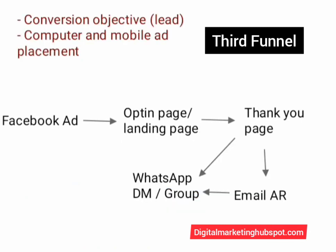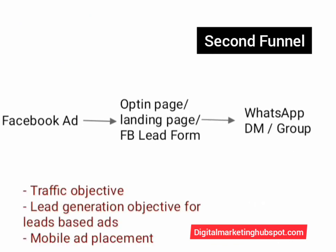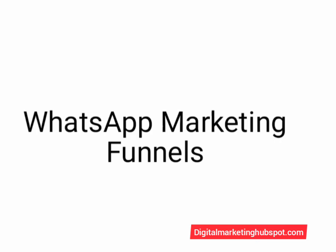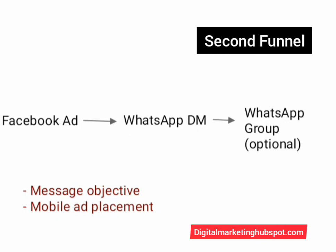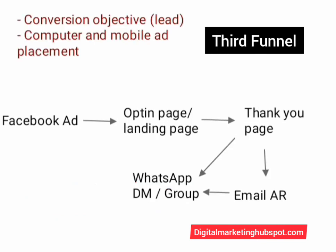For Funnel 1 using Traffic objective, you may not need the pixel, but for the Conversion objective in Funnel 3, you do need it. Placement for Funnel 3 can be both mobile and computer, or mobile only. These are the three funnels many people use when running ads to their WhatsApp. Once you understand and use any of them, you are going to get good results.